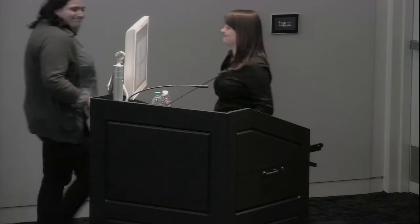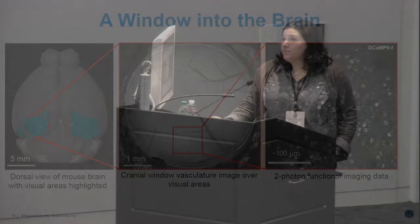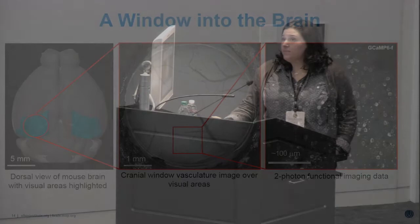Hi, I'm Allie, and I am on the surgery team. In order to accomplish the goals of CAM and measure activity in specific visual areas, we first need to access the brain and repeatedly find and return to the cells we want to image from day to day. The target neurons are about 12 microns in size — quite small. Finding and returning to these cells is a big challenge of the pipeline.